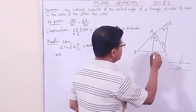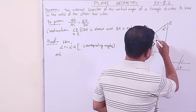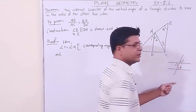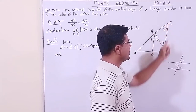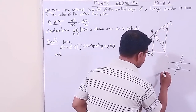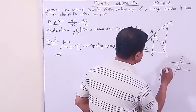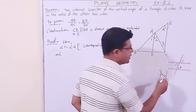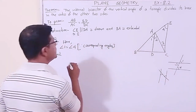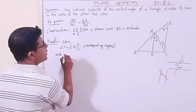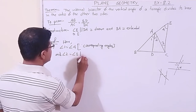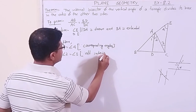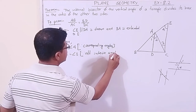Also, angle 2 equals angle 3 because they are alternate interior angles. The two parallel lines are AD and CE, with the transversal, so angle 2 equals angle 3 — alternate interior angles.